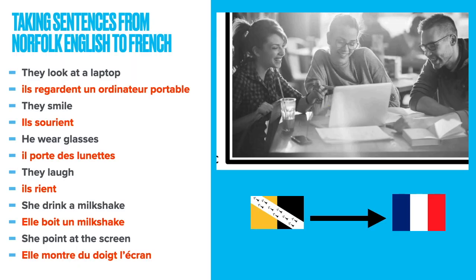So remembering that first slide where we had the picture described in standard English, now we take it from Norfolk English into French. 'They look at laptop' becomes 'ils regardent un ordinateur portable'. 'They smile' becomes 'ils sourient'. 'He wear glasses' becomes 'il porte des lunettes'. 'They laugh' becomes 'ils rient'. 'She drink a milkshake' becomes 'elle boit un milkshake'. 'She point at the screen' becomes 'elle montre du doigt l'écran'. We've chopped out any of the 'is's' and 'are's' and eliminated that mistake by making that extra Norfolk translation step.